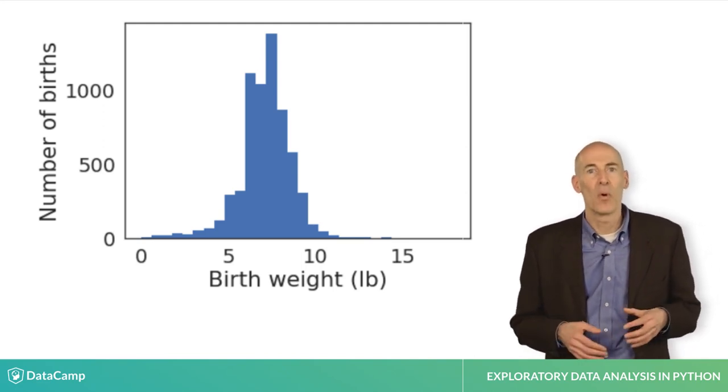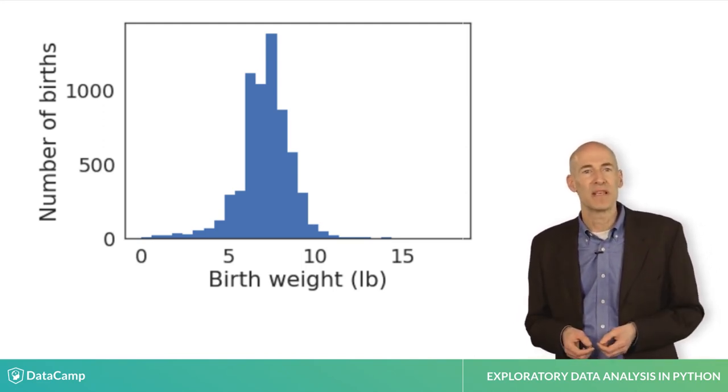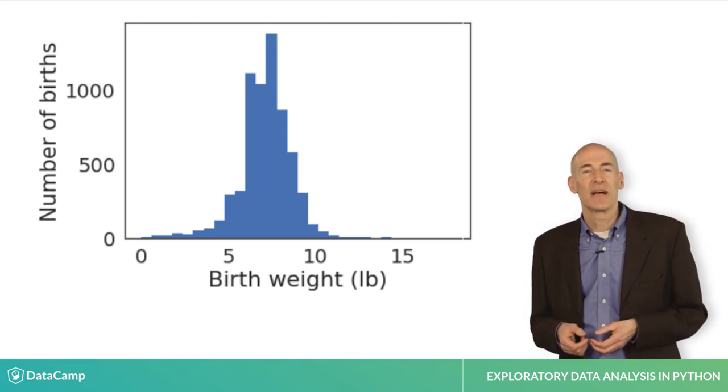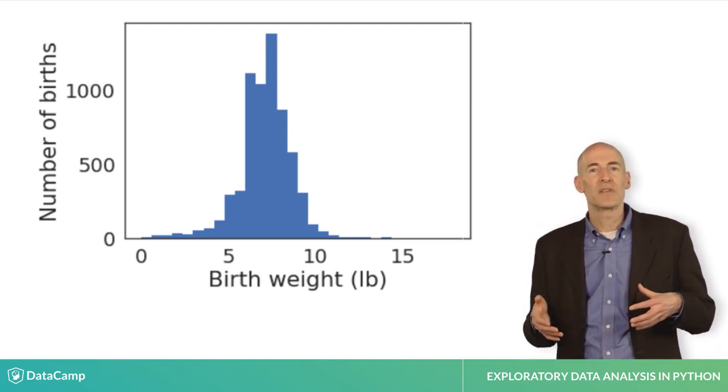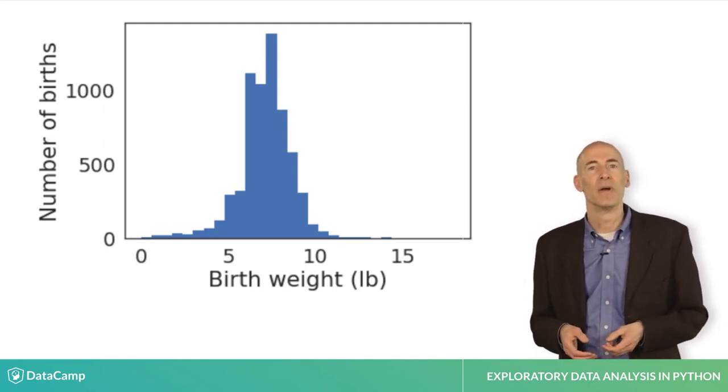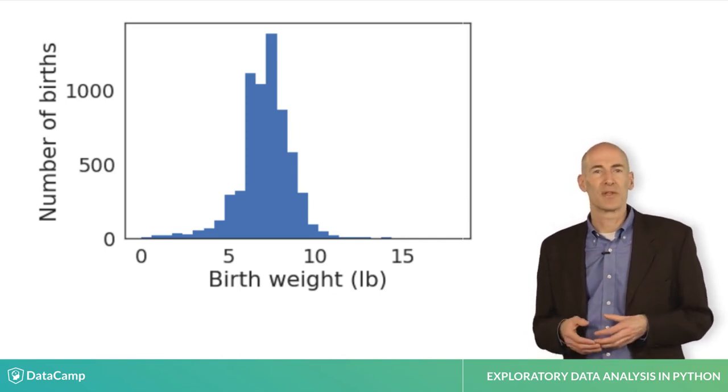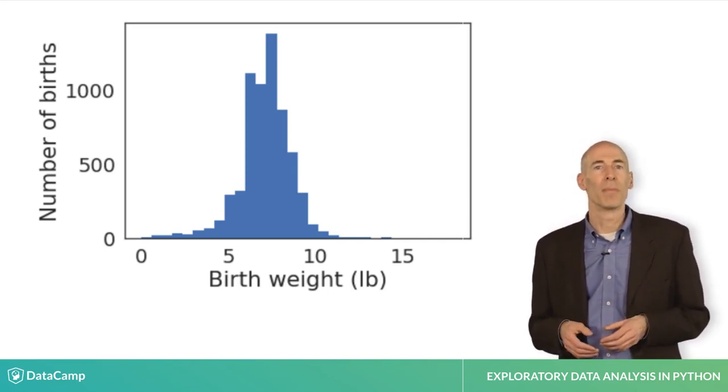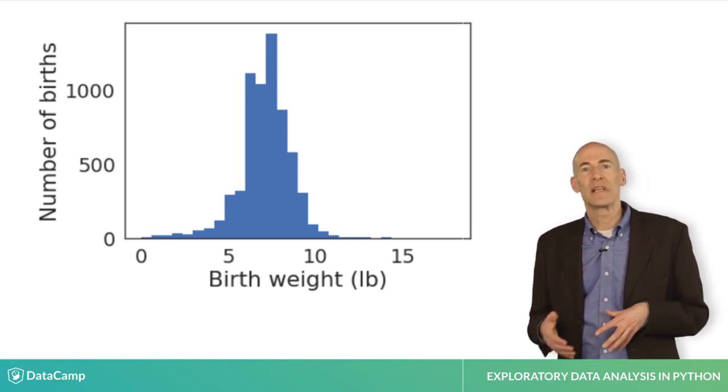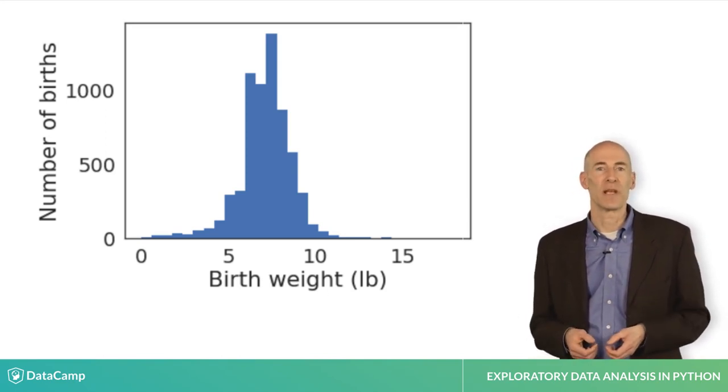That is, there are more light babies than heavy babies. That makes sense because the distribution includes some babies that were born preterm. The most common duration for pregnancy is 39 weeks, which is full term. Preterm is usually defined to be less than 37 weeks.